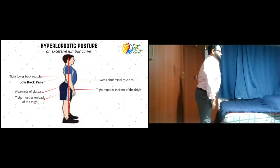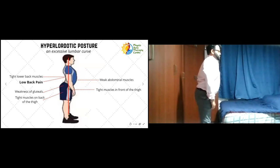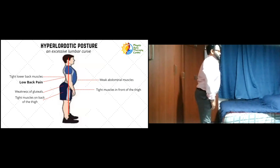With the increased arch of the low back comes tightness of the muscles there, which causes low back pain over time. A hyperarched low back also stretches the abdomen, causing the abdominal muscles to weaken over time. Since the hips are pushed excessively backward, the gluteal muscles are also stretched, leading to weakness. Additionally, the muscles in front and back of the thigh develop tightness in this kind of posture.